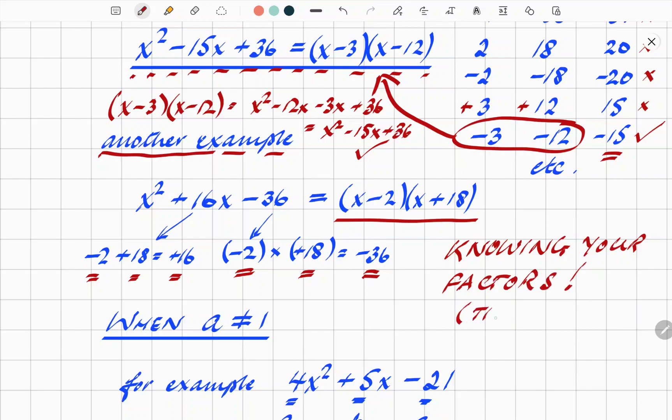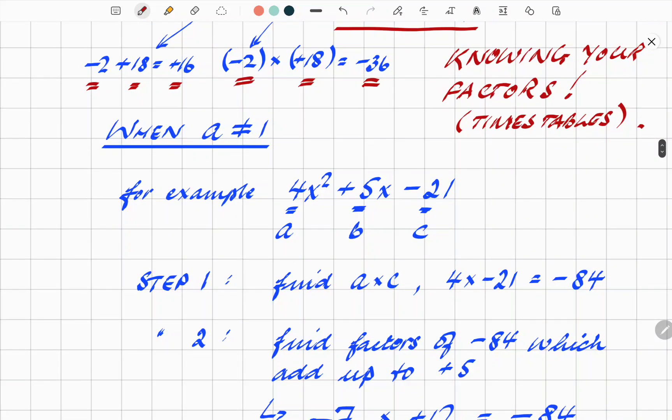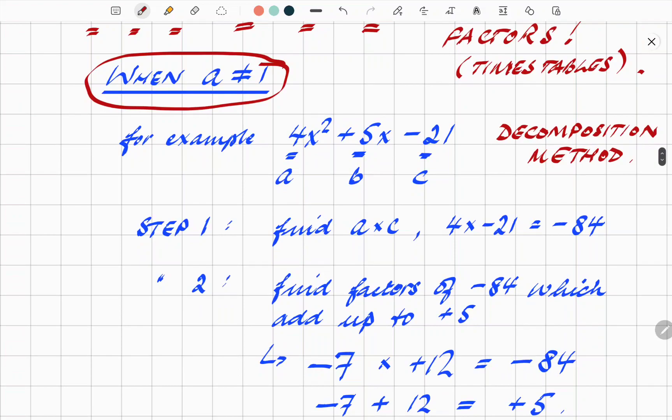So the whole thing is all about knowing your factors, i.e. times tables. I know, sounds a little bit basic, but that's really all it is. No special magic involved. This next step, when a does not equal 1. And I'll show you a step-by-step method. It's called the decomposition method in some books. There we are. And you will see in a moment why it's called decomposition method.